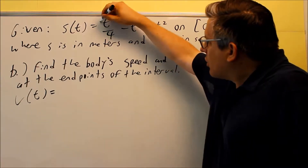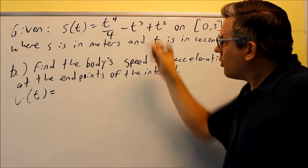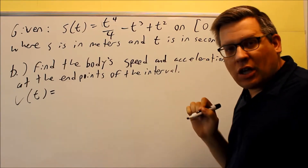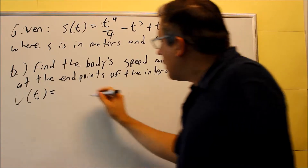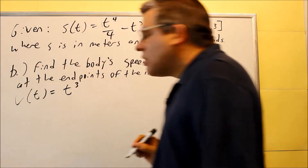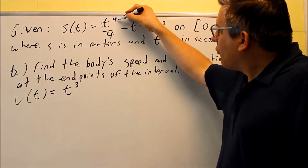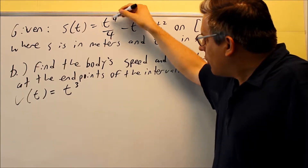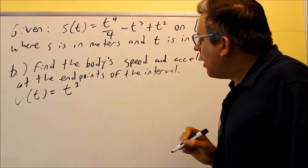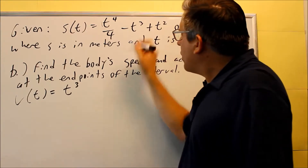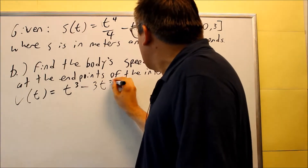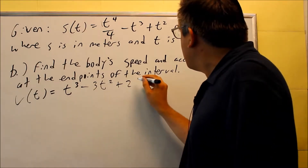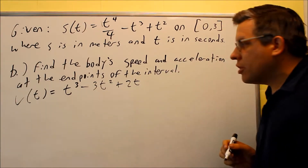We can think of the first term as one-fourth t to the fourth. Using the power rule, the four comes down and cancels the four on the bottom, leaving t cubed. Four came down, giving four over four which is one, then subtract one from the exponent to get three. For the next term, three comes down giving minus three t squared. And for the last term, two comes down and subtract one to get two t.